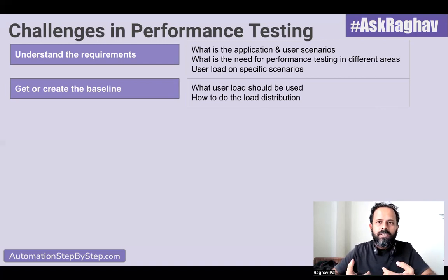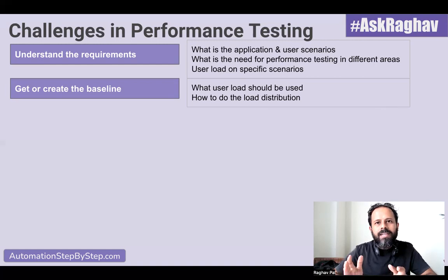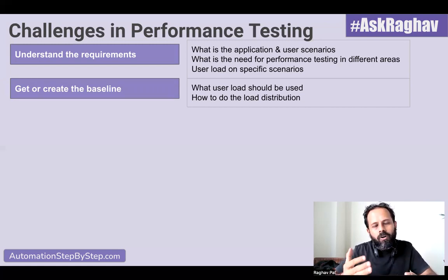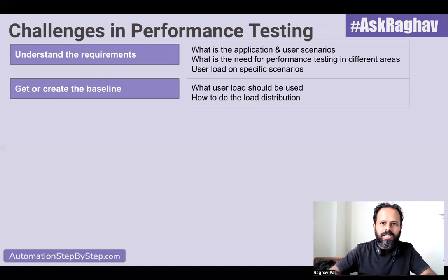It may also happen that you are not given a baseline and you have to create it yourself. In that case, you can run the test with different user loads starting with a single user, then go to 10, 20, 50, 100, 1000, and so on, and document the performance at each user load. You can take an average of multiple tests and create a baseline. You will compare all subsequent tests against this baseline. Once created, take a sign-off from all the stakeholders confirming this is the baseline to be used.